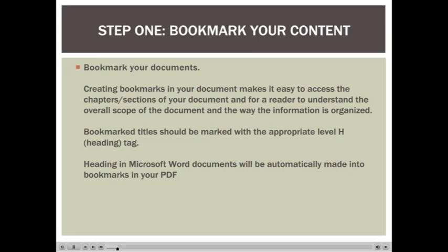Step one in creating an accessible PDF document is to bookmark the different sections within your content. Creating bookmarks in your document makes it easy to access the different chapters or subsections within your document, and makes it easy for a reader to understand the overall scope and organization of the document.